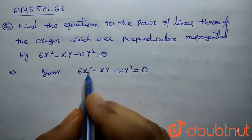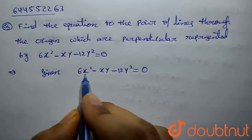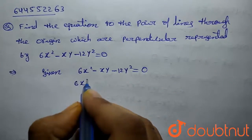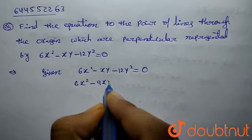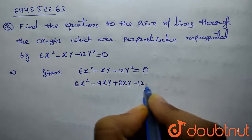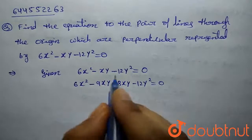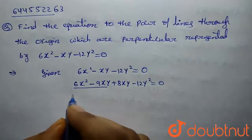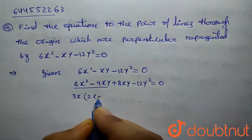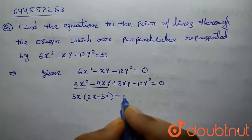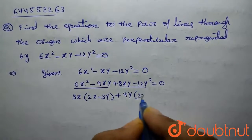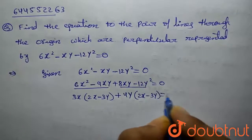We need to find the pair of equations lying inside the given expression. So we split the middle term: 6x² minus 9xy plus 8xy minus 12y² equals 0. Taking 3x common from the first two terms and 4y common from the last two terms gives us the factors, yielding 2x minus 3y equals 0.